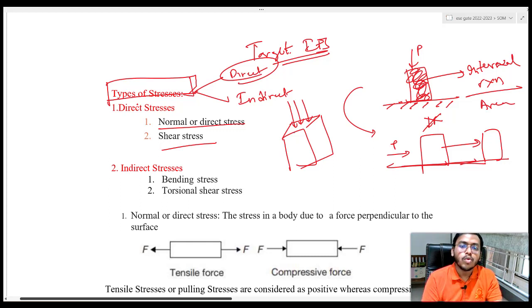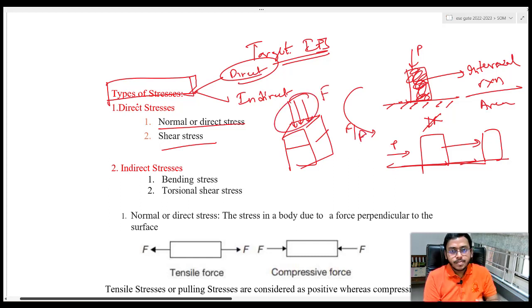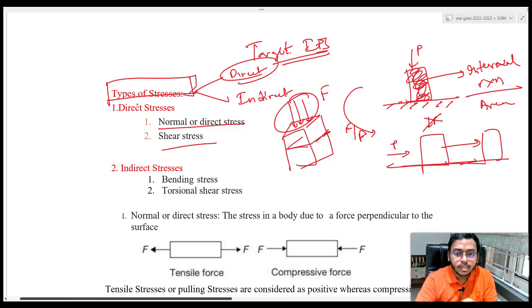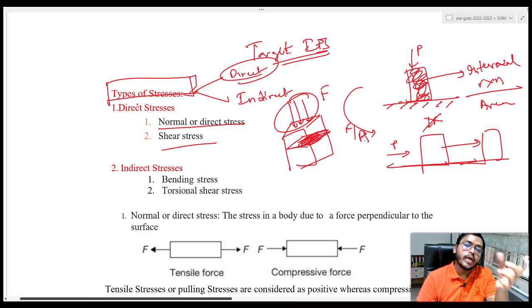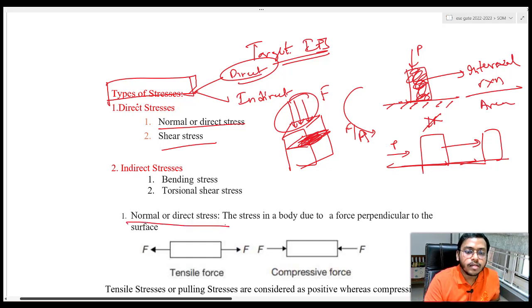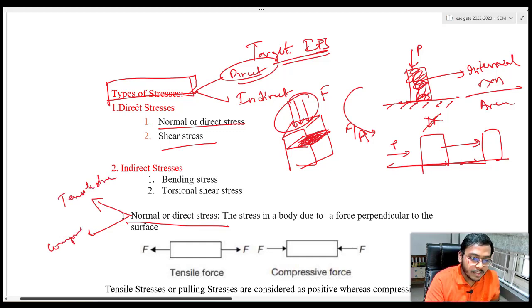What will be the stress in this case? F divided by A. If the total force acting is F, that much is being resisted by the body also. Force divided by area of cross-section of this particular body — that will give me the normal or direct stress. In this, there are again two categories: tensile stress and compressive stress. Normal stress or direct stress can be subclassified as tensile stress and compressive stress.